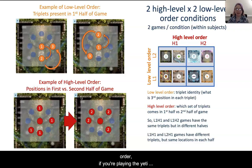And for the high level order, if you're playing the Yeti game, that differs from the Fairy game. The Yeti game will have these four positions and the triplets that go along with them come first in the first half of the game, and these other four positions and the triplets covering them will go in the second half. That's the high level order condition.